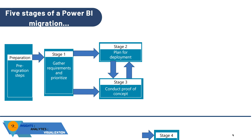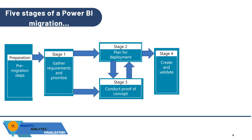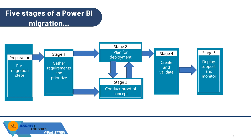Stage 4 is to create and validate. This is when the actual work to convert your proof of concept into a production-ready solution is done. While a proof of concept is generally a single report or dashboard, Stage 4 involves creating a final solution with multiple reports, dashboards, and other components into a complete project. The output is a completed Power BI solution validated in a development environment, ready for deployment in Stage 5.